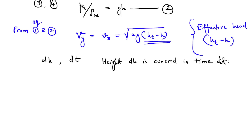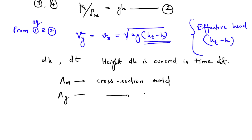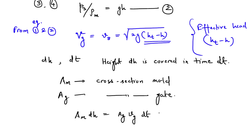A_M is the cross-sectional area of the mold and A_G is the cross-section of the gate. So we have: A_M · dH equals A_G · V_G · dT. Let's call this equation number three.